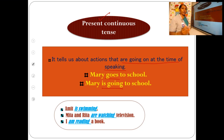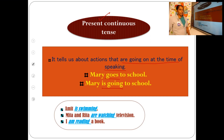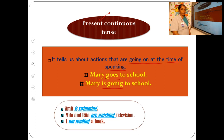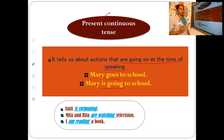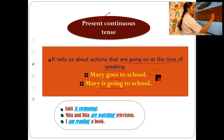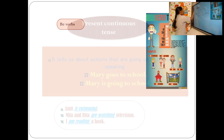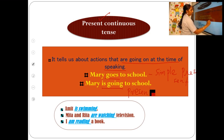'Mary goes to school' means she goes every day — it's a regular action. But 'Mary is going to school' means you can see her going to school at that time — that particular action is happening right now. That's the difference between simple present and present continuous tense. This is in simple present tense form, and this is in the present continuous form.